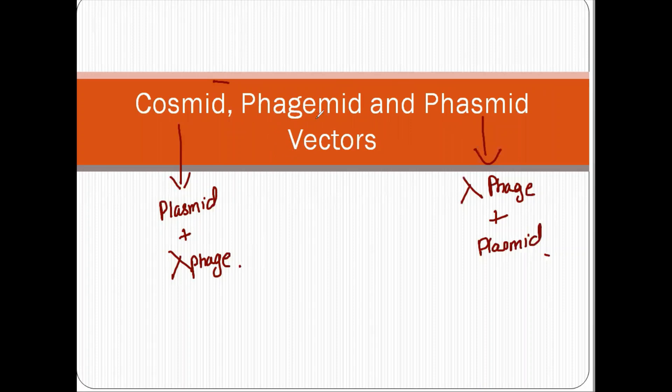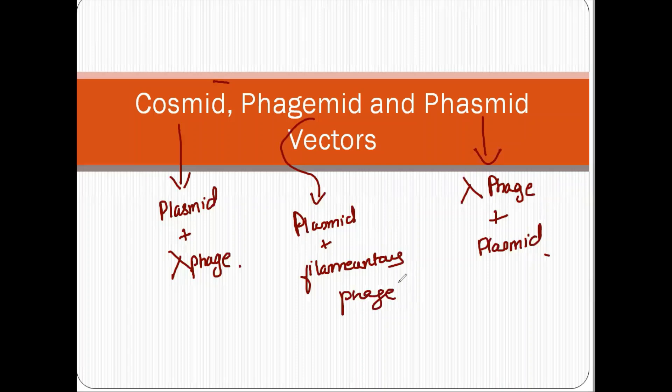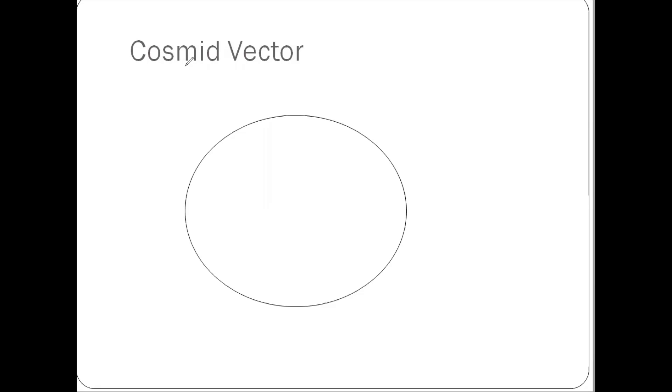Now comes phagemid vectors. So phagemid vector is also a plasmid, but it has filamentous phage. This phage as you can see here. So this is a combination of bacteriophage vector and plasmid vector. So we have three types, cosmid, phagemid and phasmid. Let's learn each and every vector in detail.